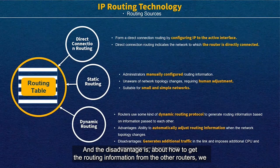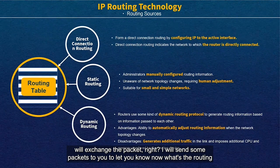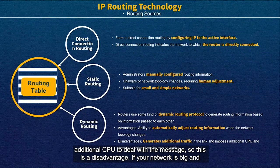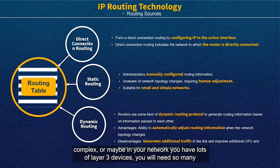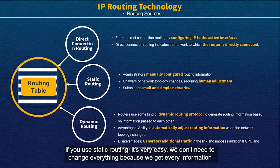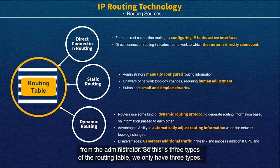The disadvantage of dynamic routing is that to get routing information from other routers, we exchange packets — I will send some packets to let you know my routing information. This takes some resources and also requires additional CPU to process the messages. If your network is bigger and more complex, or you have lots of unnecessary devices, you may need many resources to exchange packets for the dynamic routing protocol. But if you use static, it's very simple — we don't need to exchange anything because we get all information from the administrator.